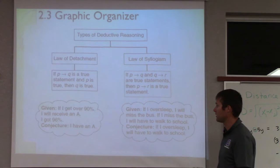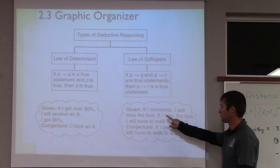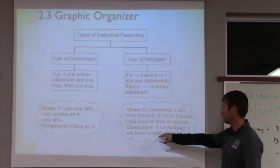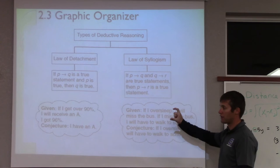Law of syllogism: if I oversleep, I will miss the bus. If I miss the bus, I will have to walk to school. You see three statements. So the conjecture is: if I oversleep, I will have to walk to school. We take the first part and connect it to the last part, as long as they're all true. If any part breaks down and isn't true, then we can't use it.